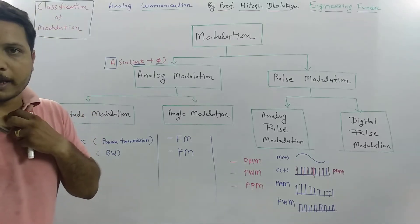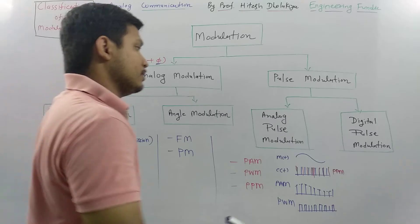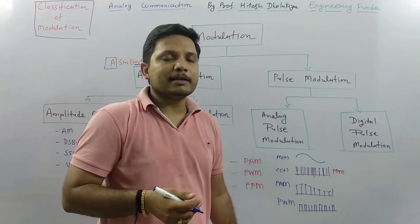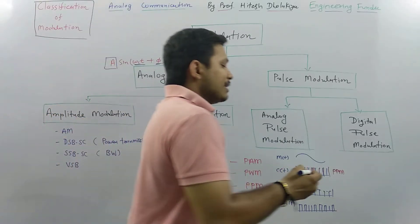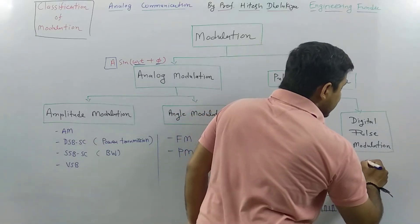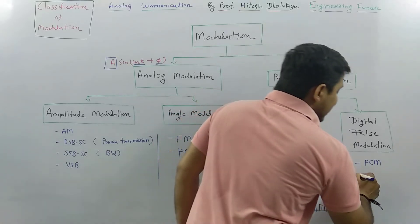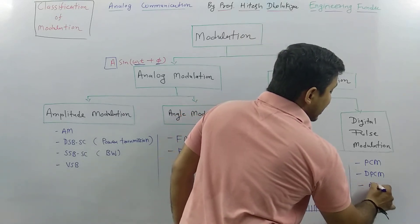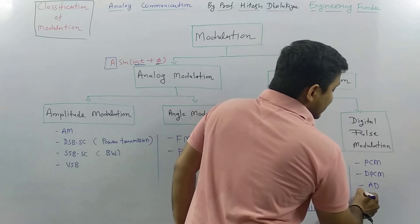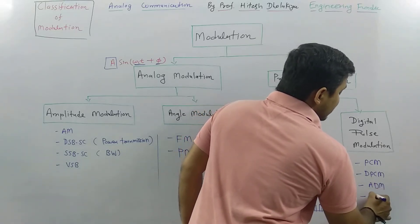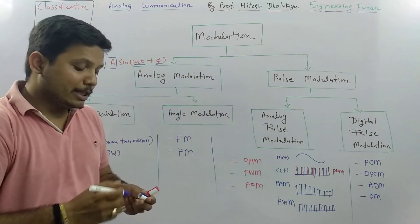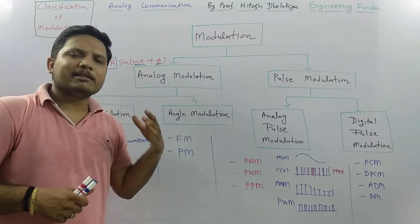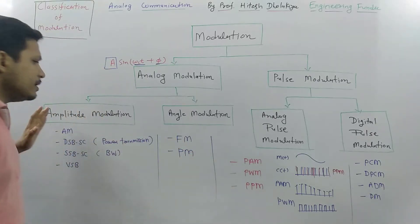In digital pulse modulation, we digitize the signal. I will explain four techniques: pulse coded modulation (PCM), differential pulse coded modulation (DPCM), delta modulation, and adaptive delta modulation. These four techniques will be covered in the course of analog as well as digital communication engineering.